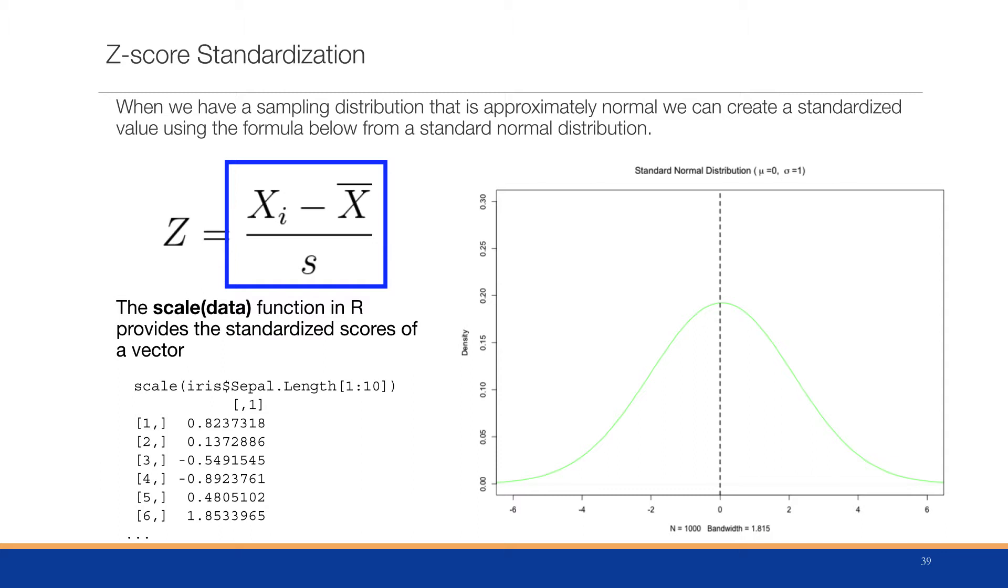This will give us what's known as a z-score. The scale data function in R will provide these standardized scores of a vector. But what does this z-score actually mean?